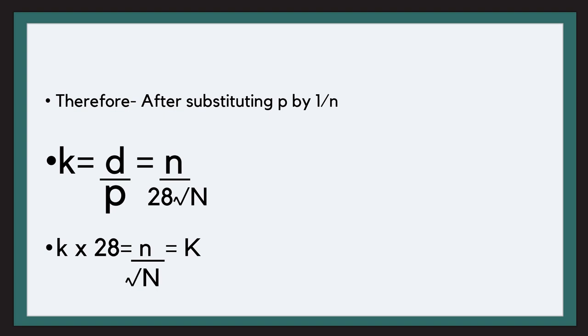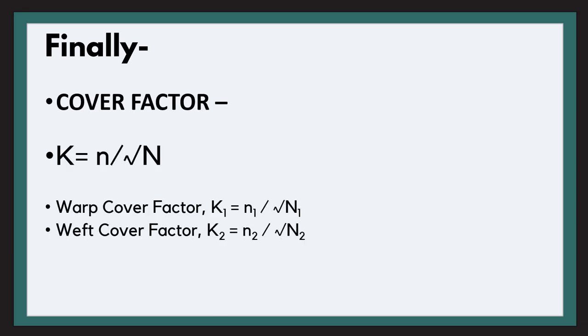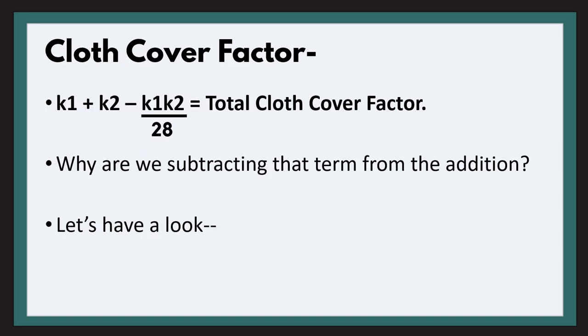So after all the substitutions, we get K equals N upon 28 into under root N, where small N denotes threads per inches and capital N denotes the yarn count. We will multiply 28 to small K which gives us N upon under root capital N which equals capital K, our cover factor. So we have warp cover factor K1 equals N1 upon under root warp yarn count, and weft cover factor K2 equals N2 upon under root weft yarn count. The cloth cover factor is K1 plus K2 minus K1 K2 upon 28.